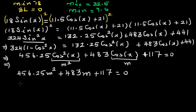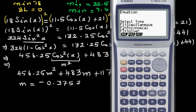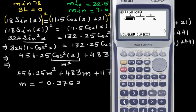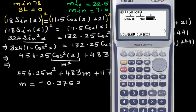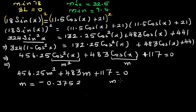Using the calculator: go to Equations, then Polynomial second degree. Type in a = 456.25, b = 483, c = 117, then solve. The two values rounded to 4 decimal places are m = −0.3752 and m = −0.6834.